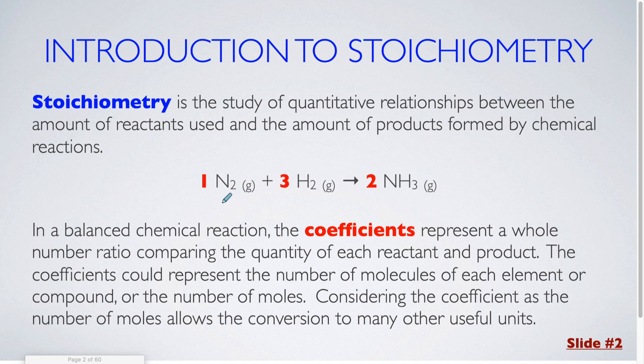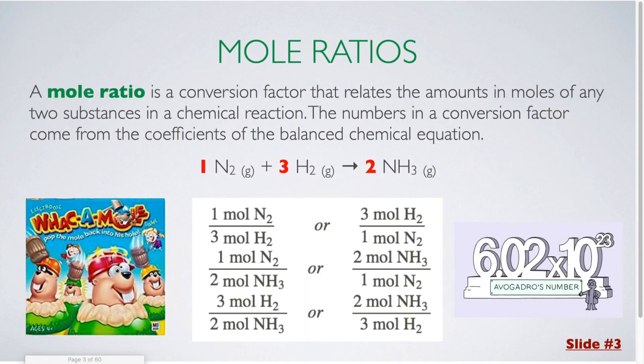If we are looking at this balanced equation shown here, we can see that for every one N2 molecule, we need three H2 molecules in order to form two NH3 molecules. A mole ratio is a conversion factor that relates the amount of moles of any two substances in a chemical reaction. The numbers in the conversion factor come from the coefficients in the balanced equation. In the picture shown here, we can see all the possibilities for how we can compare our reactants and our products for this particular chemical reaction.